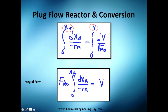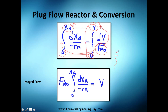The conversion is directly dependent on the volume — the higher the conversion, the higher the volume required. Integrating the right side from zero to V gives simply V. So the integral form of the PFR design equation is: V divided by FA0 equals the integral from zero to xA of dxA over negative rA.